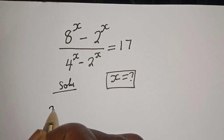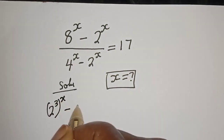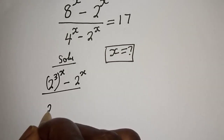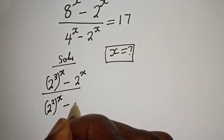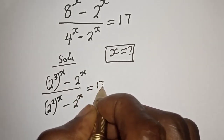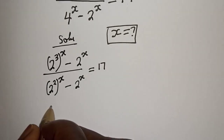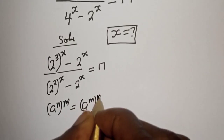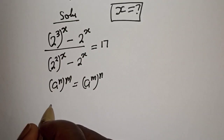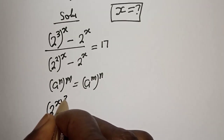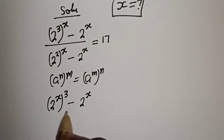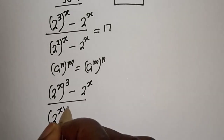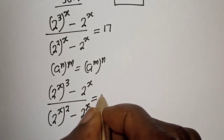8 raised to power s can be written as 2 raised to power 3, raised to the power of s. And 4 raised to power s can be written as 2 squared raised to power s, minus 2 raised to power s, is equal to 17. Using the exponential rule that a raised to power n to the power of m equals a raised to power m raised to power n, we can rewrite 2 raised to power 3 raised to power s as 2 raised to power s raised to power 3, and 2 raised to power 2 raised to power s as 2 raised to power s raised to power 2, minus 2 raised to power s, equals 17.